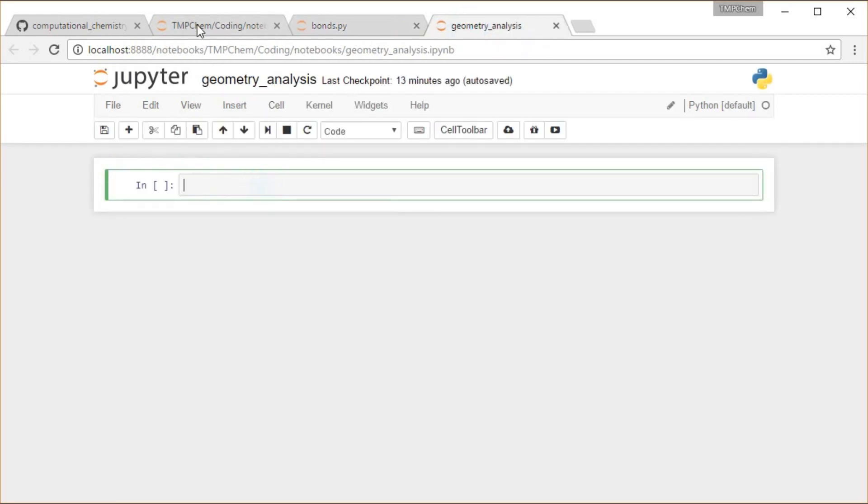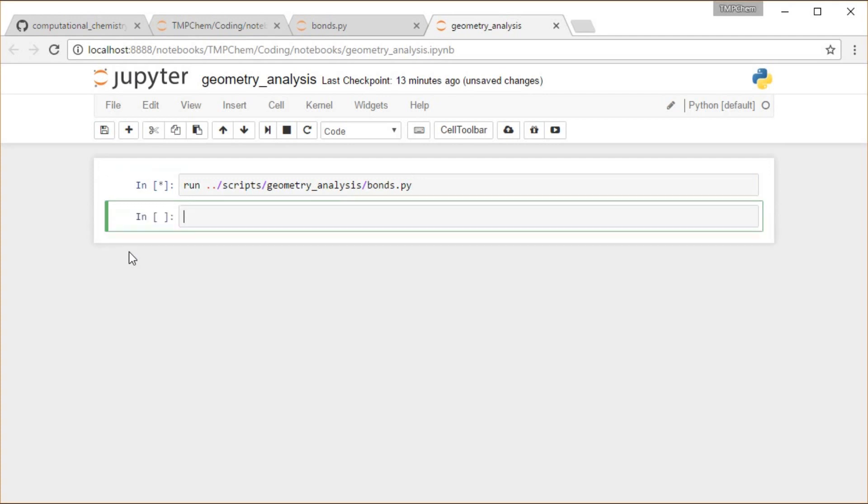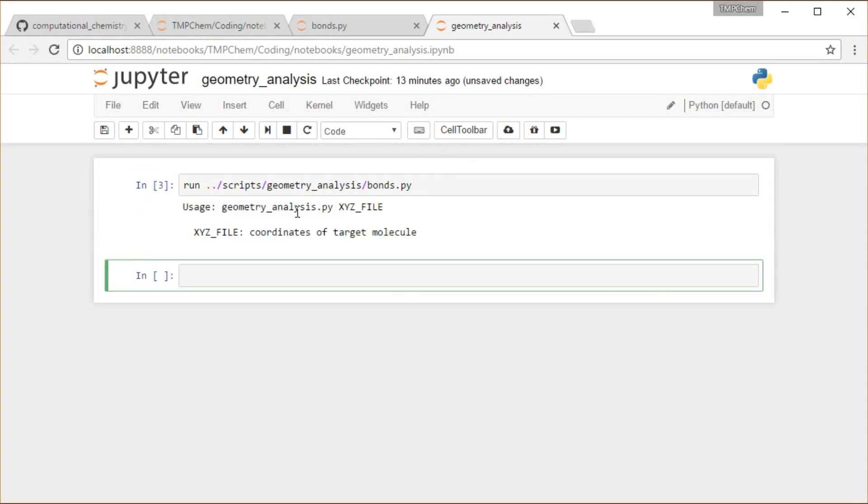Okay, so inside my Geometry Analysis Notebook, which I have running in this directory here, I'm going to run this. So I'm going to say run ../. I'll hit tab, all the directory choices. I'm going to hit scripts, enter. Tab, Geometry Analysis, enter. Tab, bonds.py. And any of these scripts, typically, if you run them without any input arguments, if I hit shift enter, it's going to run this and it's going to give me the usage of this. So I say geometry_analysis.py. That's incorrect. I should change that to say bonds.py. Whoops. Okay, bonds.py XYZ file.